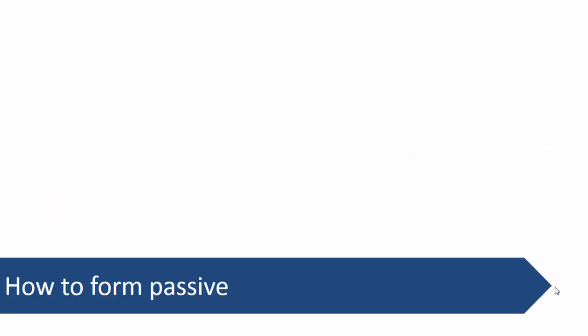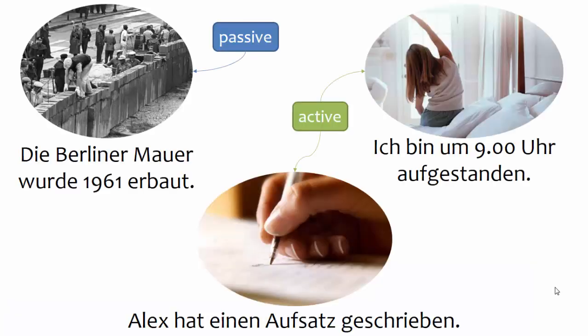Now that you understand the difference between active and passive, and the situations where you might encounter or use passive, here's our final step: how to form the passive. In German as in English, the passive is formed with a helping verb and the participle of the main verb. If you need a refresher on helping verbs or participles, those videos are in the playlist. For sentences in the past tense, the selection of the helping verb indicates whether you're dealing with active or passive. Werden is the helping verb that indicates passive, while active in the past tense is indicated by the helping verb haben or sein.